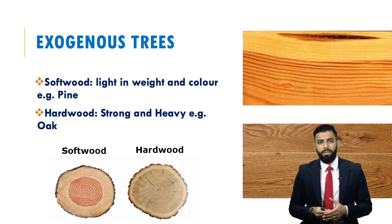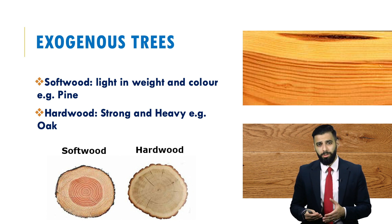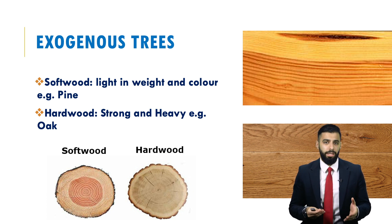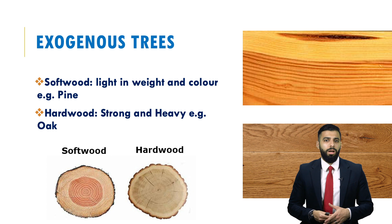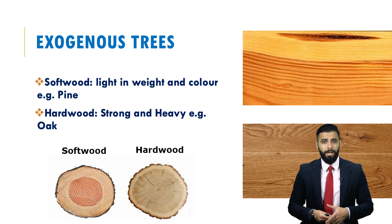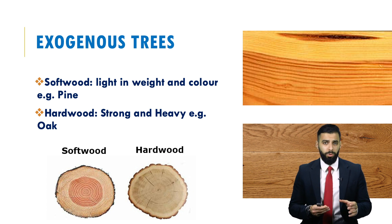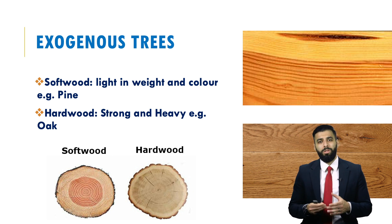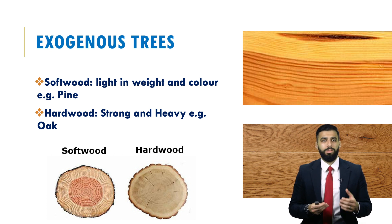If we look at exogenous trees, they can be further classified into two main types: softwood and hardwood. In softwood, the higher permeable layer known as the sapwood is larger than in hardwood. If you take a cross-section of the tree, you'll notice that the sapwood is shown as the light-coloured material. For softwood, that sapwood is higher in proportion compared to hardwood, and that's why softwood is lighter in weight and lighter in colour. Hardwood, on the other hand, is strong and heavy.